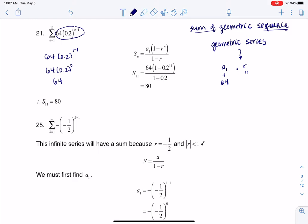And then in terms of r, when we're looking at a geometric sequence or series and you have this power, you always want to look at your base. So in this case, my base is 0.2, so that would be my r value.